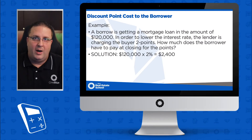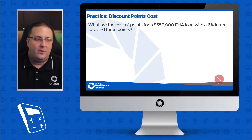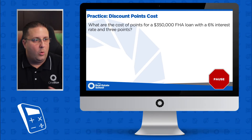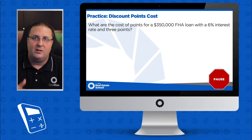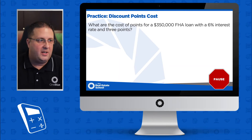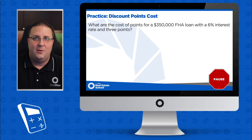Alright, now I've got two practice questions for you, so let's give it a try. Here's the first one: What is the cost of points for a $350,000 FHA loan with six percent interest and three points? Hit pause, find out the cost of the points, and when you think you have the answer, hit play.